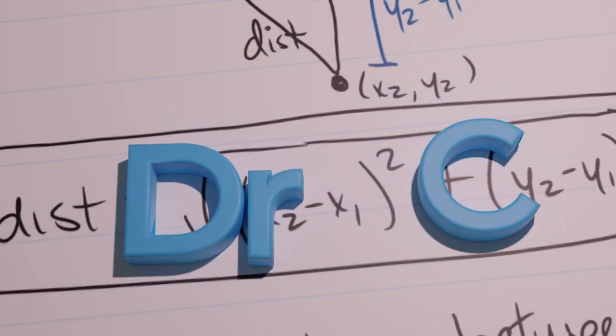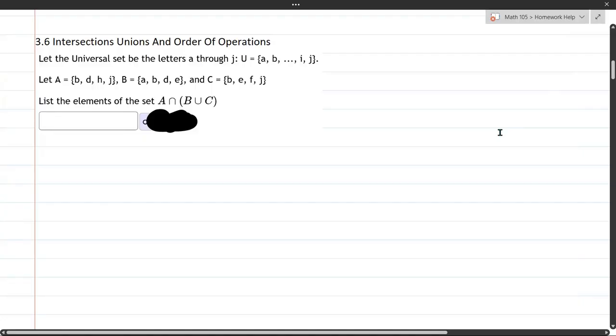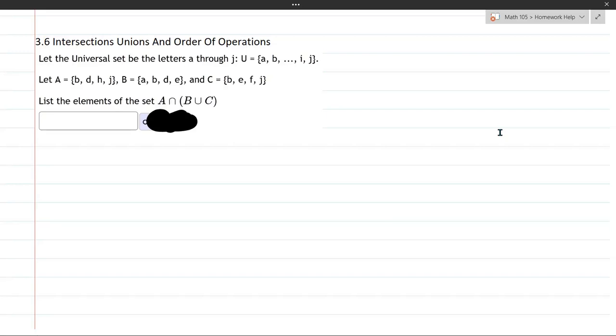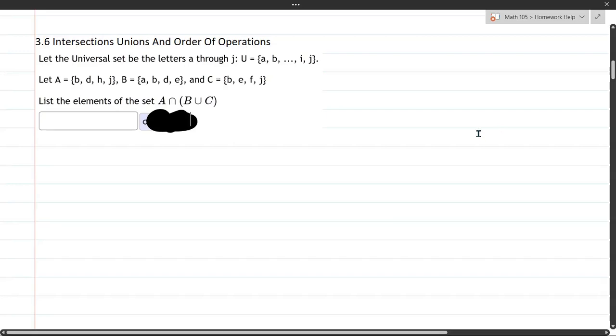In this problem, we have unions and intersections, and there's an order of operations. So what we're going to do, whenever you have parentheses, you do what's inside the parentheses first. So first thing we're going to do is compute what's B union C. So there's everything in B and everything in C. So let's go alphabetically here. So I'm looking at B and C.